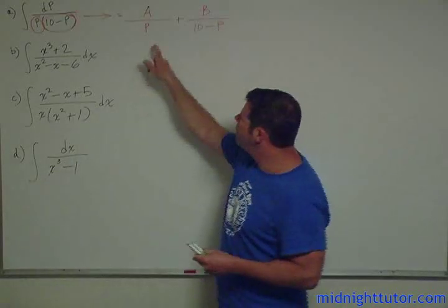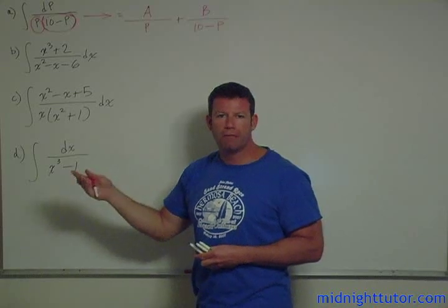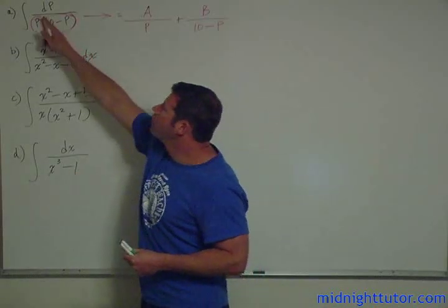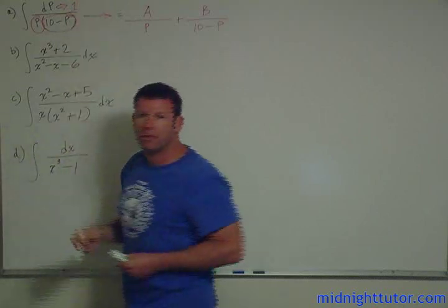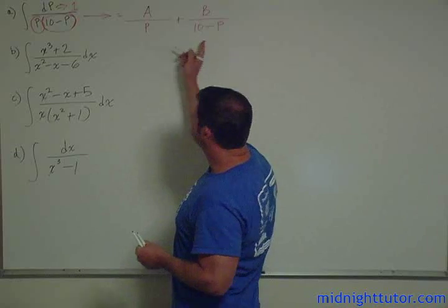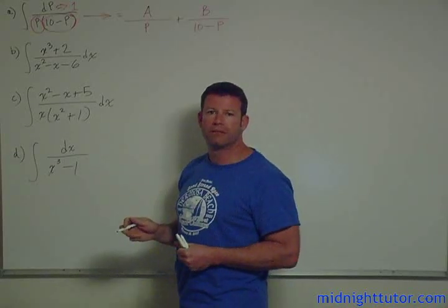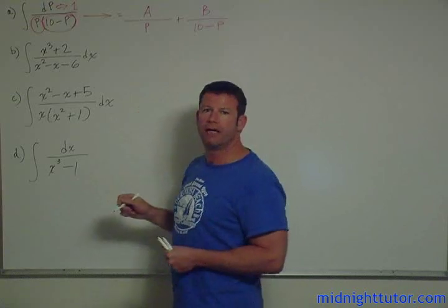So what we're going to say is there are two things when you add them together give you this. We set up A over p plus B over 10 minus p. So we're going to add these two fractions together. In order to do that we have to get common denominator and so on, we end up with a 1, essentially dp is the same as having a 1 in the numerator. So now that we've set up what the formula is going to represent, now we just have to find a and b.